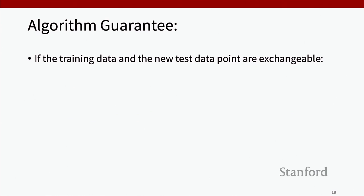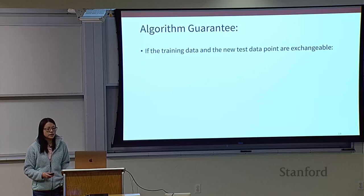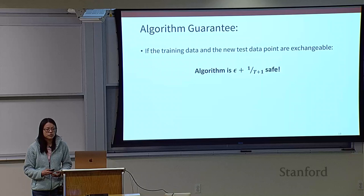The algorithm guarantee is that if the training data and the new test data point are exchangeable — meaning the probability of observing any permutation of the data is equally likely, i.e., when you have a new unsafe sample it looks like the old unsafe samples — then our algorithm is epsilon plus 1 over T plus 1 safe, where T is the number of unsafe examples. Note that exchangeability is actually a weaker assumption than the standard IID assumption in statistical learning theory.